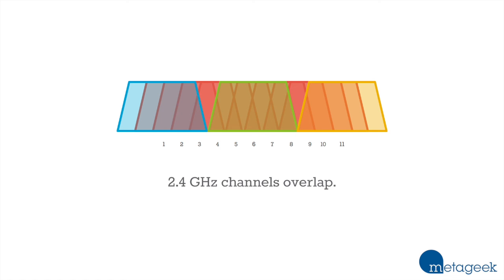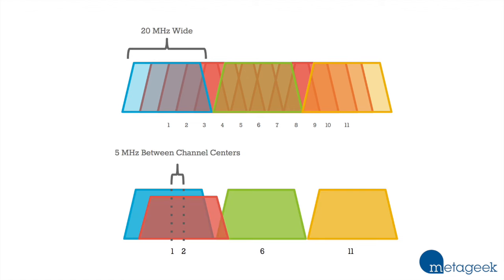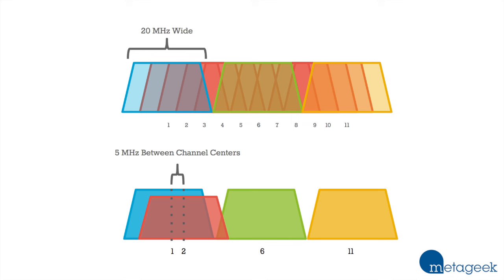The first part of the problem is the way that channels are laid out in the 2.4 GHz band. Each channel is 20 MHz wide, but the center of each channel is where they're marked and it's only separated by 5 MHz. So if you look at channel 1 and channel 2, you can see that they overlap by about 75%. The end result is that the only three channels that don't overlap are channels 1, 6, and 11.